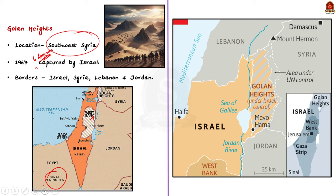After the war, Israel began establishing settlements in Golan Heights. This move was widely condemned by the international community including the UN. In 1981, Israel officially annexed the Golan Heights. The UNSC passed a resolution in the same year and declared the Israeli annexation as null and void. So as of now, Golan Heights remains a point of contention between Israel and Syria.